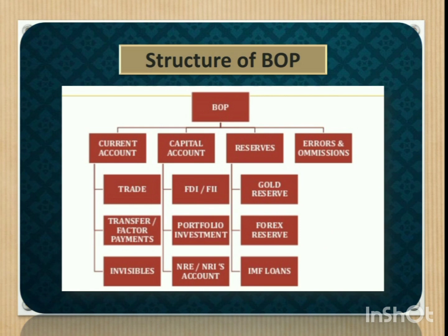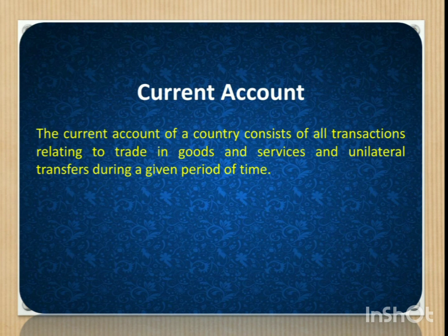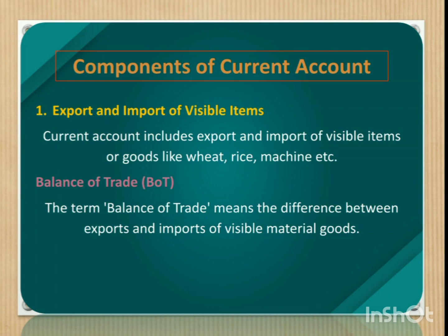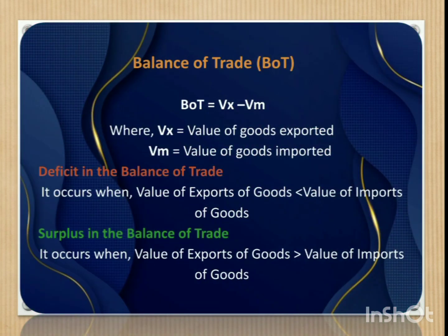Now you can see the horizontal division of balance of payment and its major components. First, current account. The current account of a country consists of all transactions relating to trade in goods and services and unilateral transfers during a given period of time. The major components of current account include export and import of visible items — that is, goods like wheat, rice, machines, etc. The difference between export and import of visible goods is called balance of trade (BOT), where BOT = Vx minus Vm, where Vx is the value of goods exported and Vm is the value of goods imported.